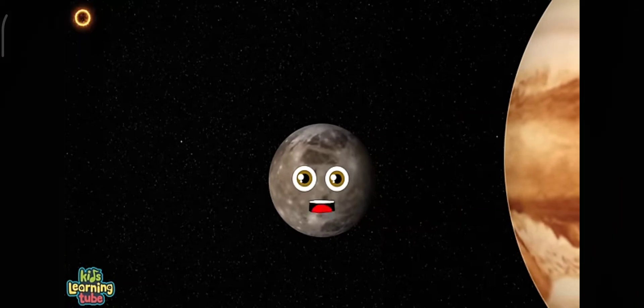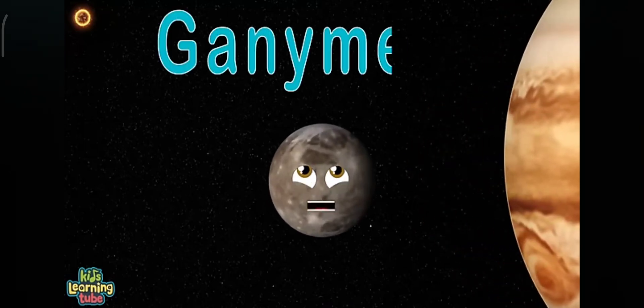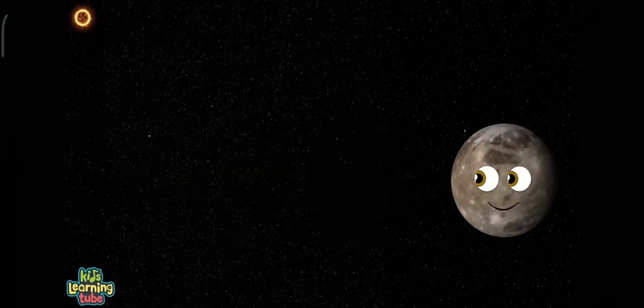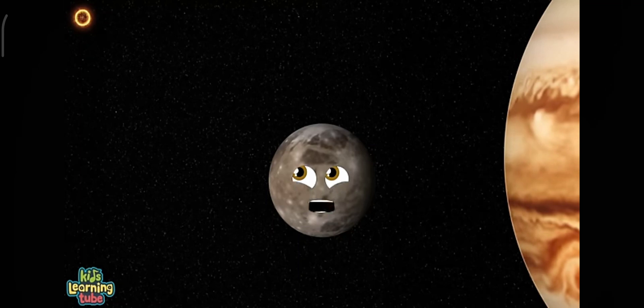I'm the largest satellite in the solar system. I orbit Jupiter, my name is Ganymede. Larger than Mercury, Pluto, and slightly smaller than Mars. I'd be classified as a planet if I orbited our star.